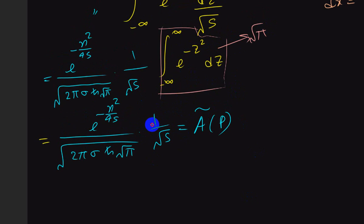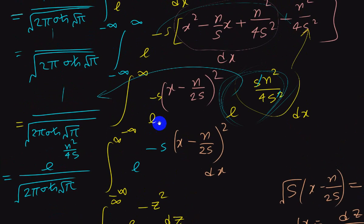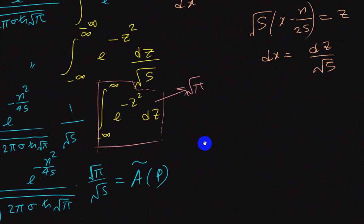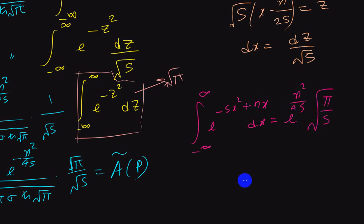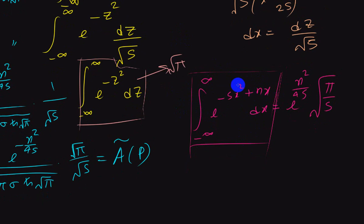I forgot to write down root π — there will be a root π there. This type of integral has a standard solution: if the integral looks like ∫ e^(−sx² + nx) dx, the solution is e^(n²/4s) · √(π/s). This is very important — we are going to use this integral over and over again, so instead of going through the whole process each time, we simply write down the evaluated value directly.